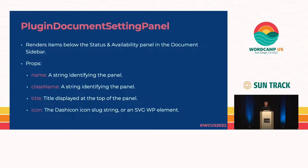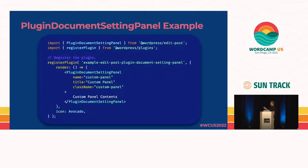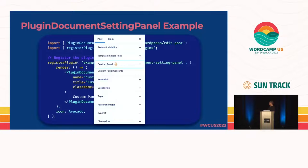Document Setting Panel — this is my personal favorite of all the slot fills. It renders items below the status and visibility panel in the document sidebar. It takes a name, a class name, a title that will be displayed, and an icon. Everything we're doing imports from the edit-post package — that's where all these slots are exported from. When this is rendered, it looks like this and we have a little component there.